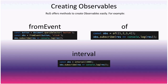Interval is another common creation method. Set an interval starting at 1000 milliseconds and subscribe to it — every one second it emits the current iteration count, starting at zero.